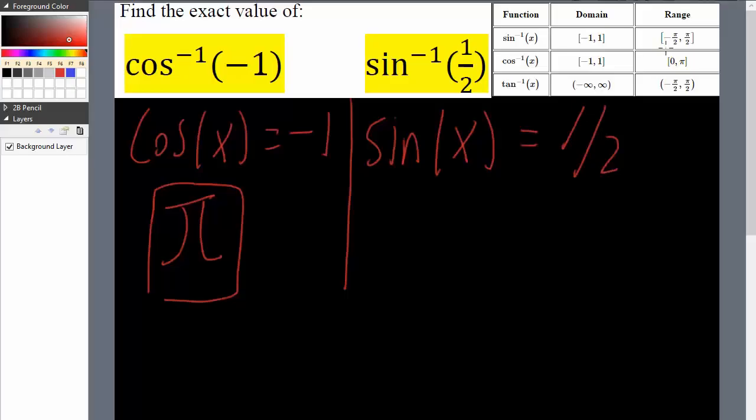What value of x between negative pi over 2 to pi over 2 would equal 1 half? That is simply pi over 6.